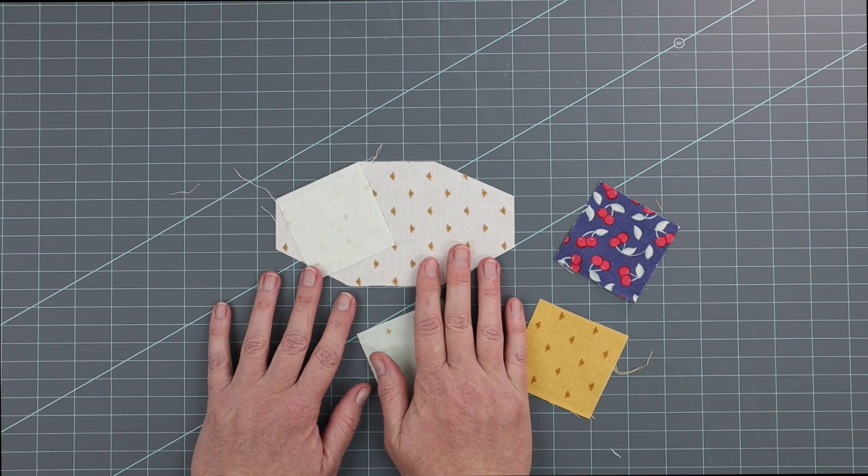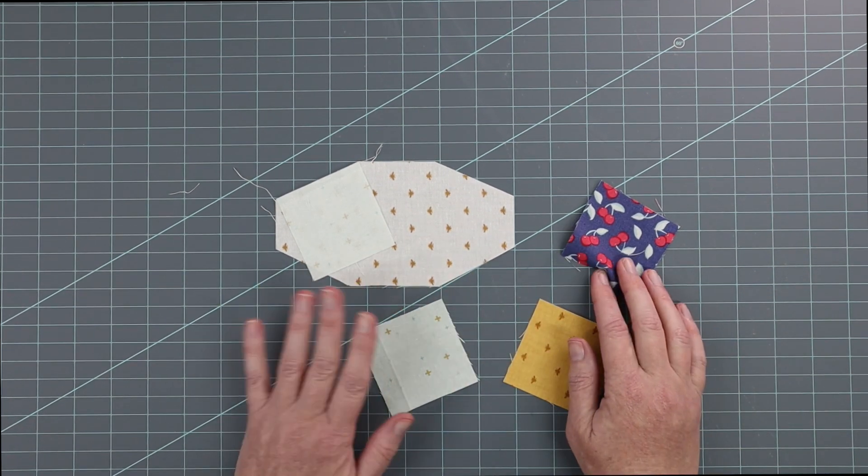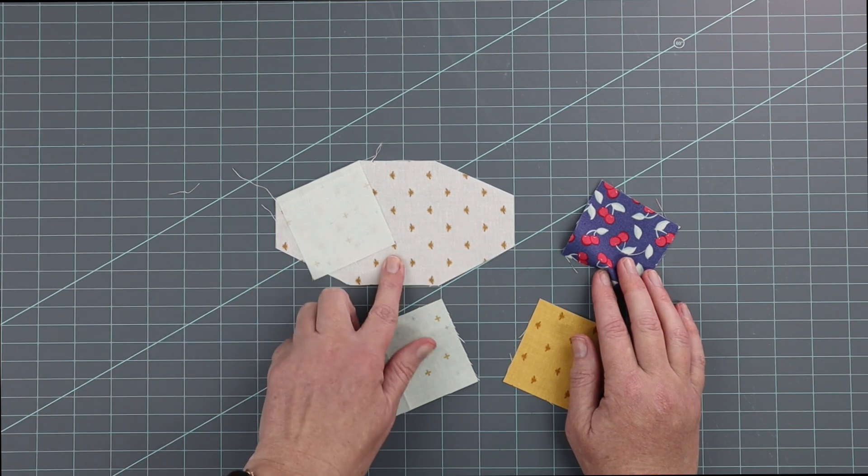I personally don't mind foundation paper piecing, but I know a lot of you guys don't like it. I found that out the hard way when I wrote a pattern that had it. So this is a way to get around it, but you do need to cut a template.